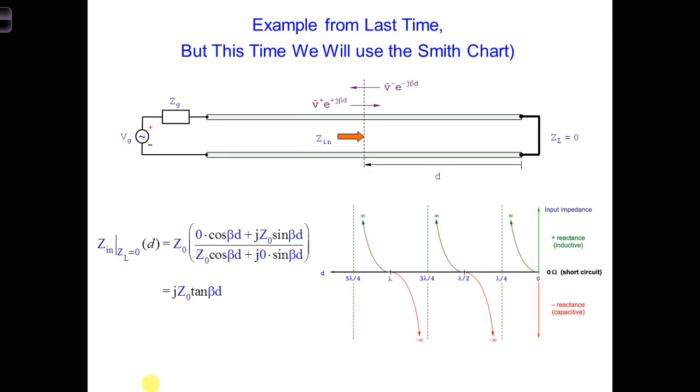Let's look at the same example as last time, but this time we will use the Smith chart. That is, let's obtain the input impedance along a transmission line terminated by a short circuit load. Remember from last time, we are expecting the input impedance to be completely imaginary, along the transmission line no matter what d is, first increasing to infinity as shown here, passing through an open circuit, then going from minus infinity to infinity and so forth.